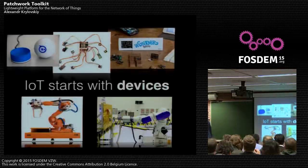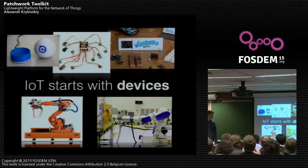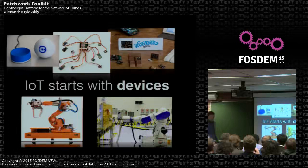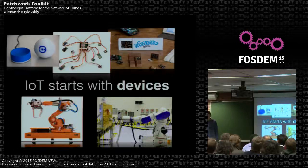The IoT starts with devices. There are a lot of them and they are all different. There are industrial devices, DIY electronics, things like Sphero, for example. There's also Wunderbar - an interesting thing I haven't got my hands on yet.